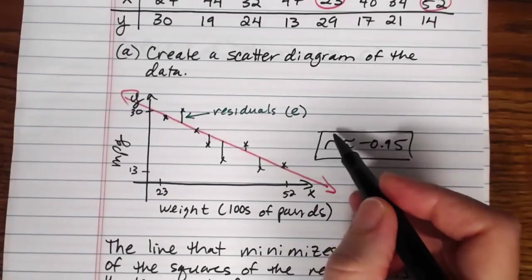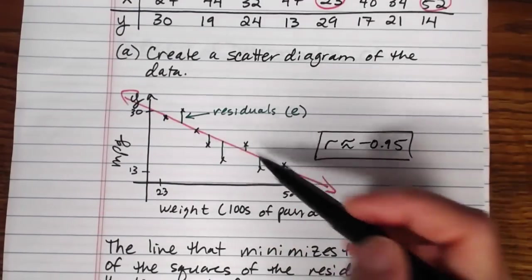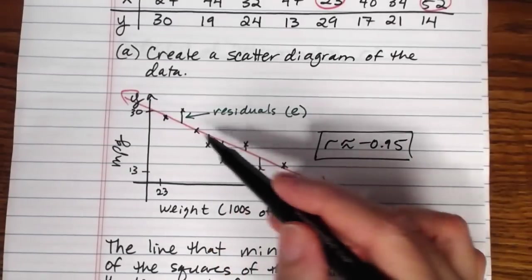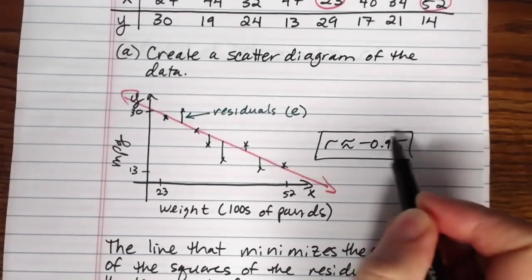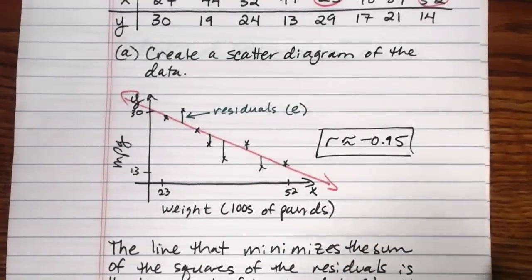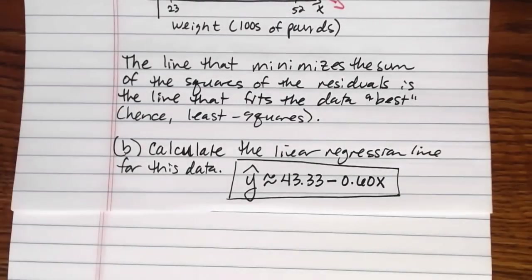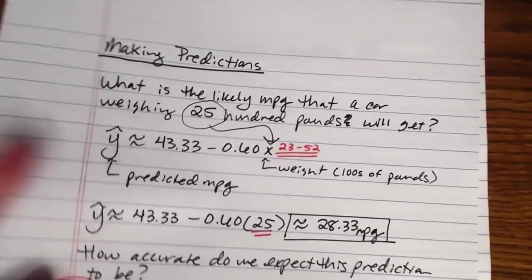We looked at our correlation coefficient, which measures the strength and direction of the linear relationship between the two variables. And we saw that it was a negative relationship, meaning it's decreasing. Also that it was strong because that value was pretty close to a negative one. We found the line of best fit here.